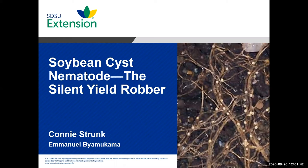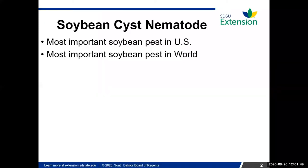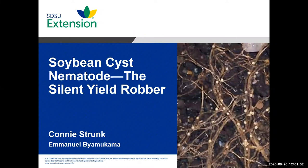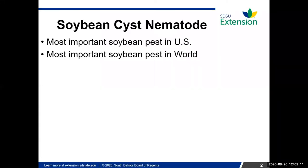SCN reduces the numbers and efficiency of the nitrogen-fixing nodules and also provides wounds for pathogens to enter, such as sudden death syndrome and brown stem rot. SCN is a microscopic unsegmented roundworm. As you can see on the first slide, on the roots the nitrogen-fixing nodules are a larger shape, whereas SCN is a very small shape. SCN is the most important soybean pest in the United States and in the world.